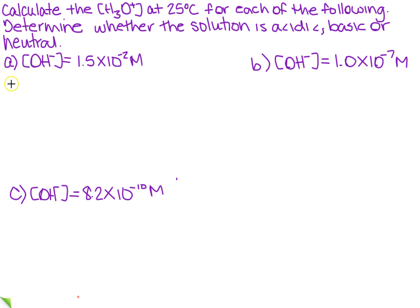If you recall from earlier, we know that 1.0 times 10 to the minus 14 equals the concentration of the hydronium ion times the concentration of the OH ion, which I already know, which is 1.5 times 10 to the minus 2.